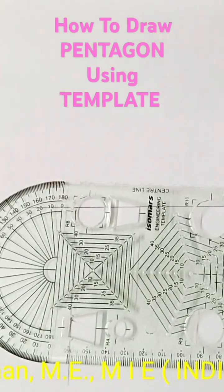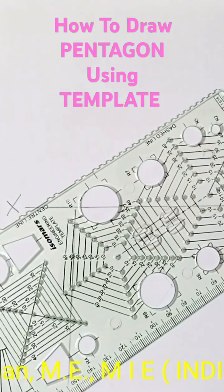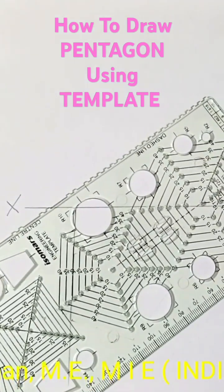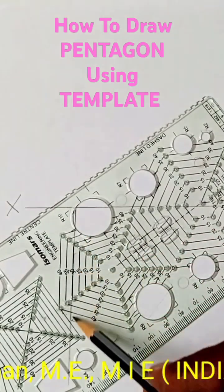You cannot, it won't coincide. You have to adjust, turn the template, okay, so that the 30mm line - 30mm side of your pentagon - must coincide with the vertical end drawn below the XY line.